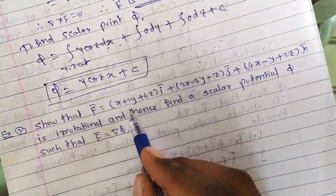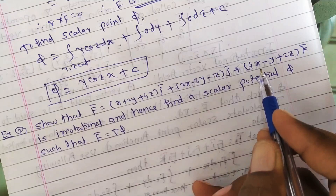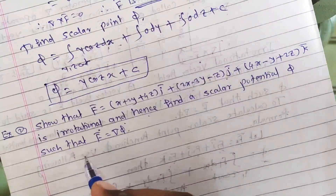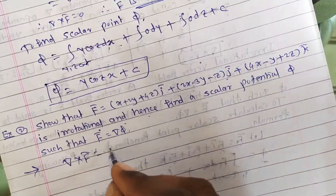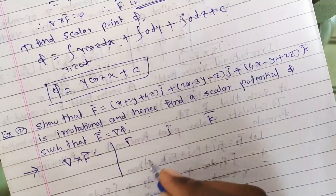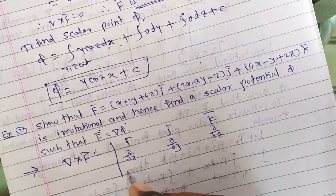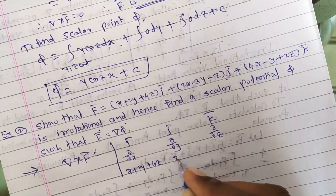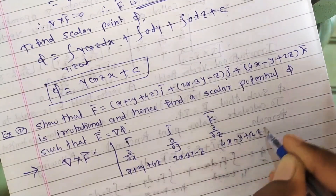Next problem: show that F̄ = (x + 2y + 4z)î + (2x − 3y − z)ĵ + (4x − y + 2z)k̂ is irrotational and find scalar potential φ such that F̄ = ∇φ. Same approach as the last problem — find ∇ × F̄. Set up the determinant with first row î, ĵ, k̂; second row ∂/∂x, ∂/∂y, ∂/∂z; third row (x+2y+4z), (2x−3y−z), (4x−y+2z).